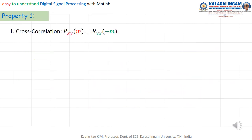The first property: cross-correlation rxy(m) equals ryx(-m). Let me prove this. Cross-correlation rxy(m) equals the summation from n equals minus infinity to infinity of x(n) times y(n minus m). This is equation 1.